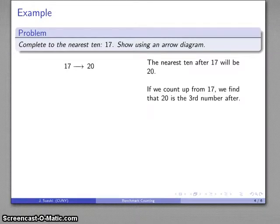And if I count up from seventeen, then I find that twenty is the third number after, so I'll indicate that using my arrow diagram.